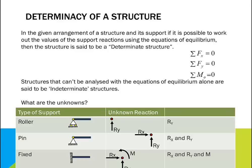To find out determinacy of a structure, we need to find out what support reactions exist in our system or structure. At a roller or slide support, there is one unknown, which is typically R-Y. At a pin support, there are two unknowns: horizontal reaction R-X and vertical R-Y. And at a fixed support, there are three unknowns: R-X, R-Y, and moment.